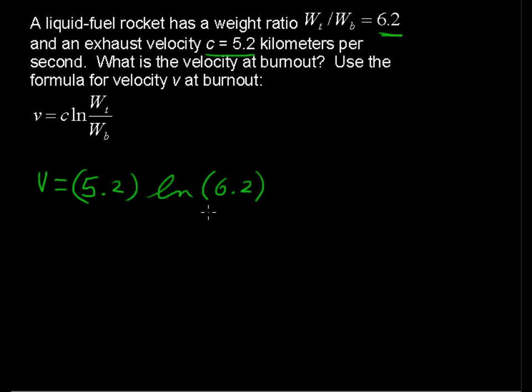So we'll type it in just like this into the calculator: 5.2 times natural log of 6.2. Or if you're not comfortable with that, you could evaluate natural log of 6.2 and then multiply that result by 5.2.